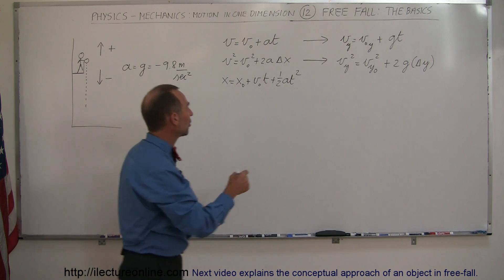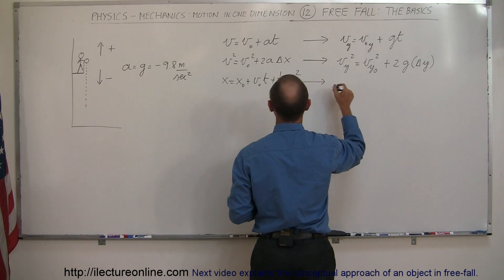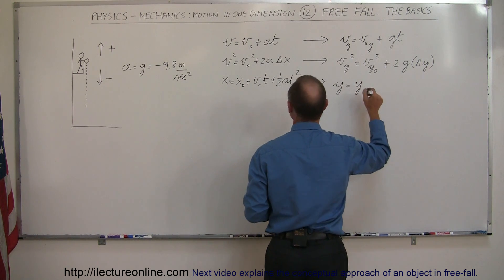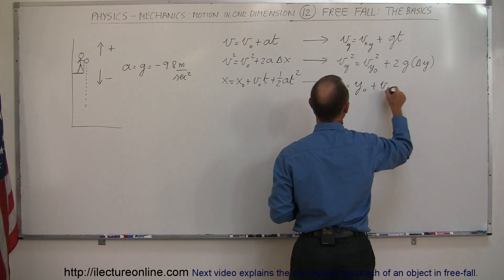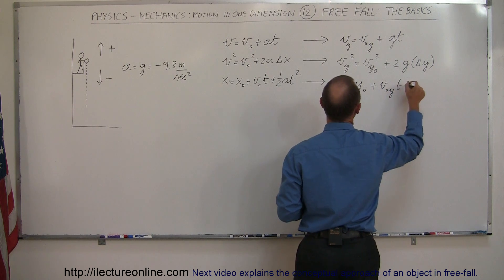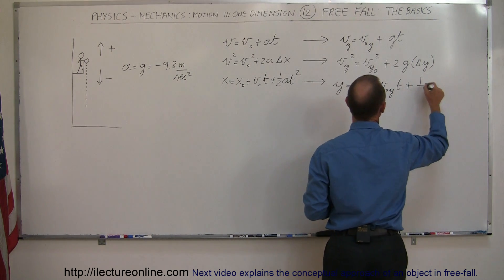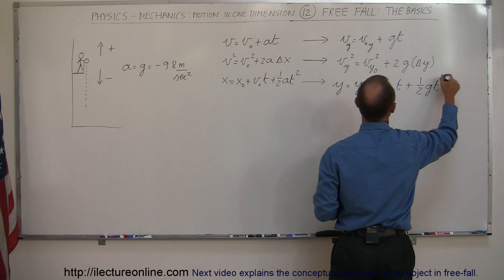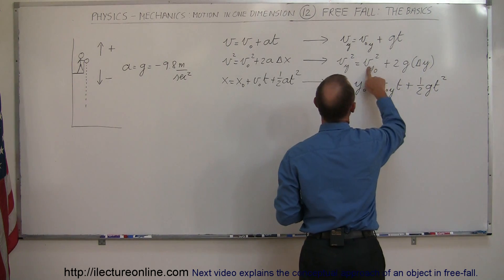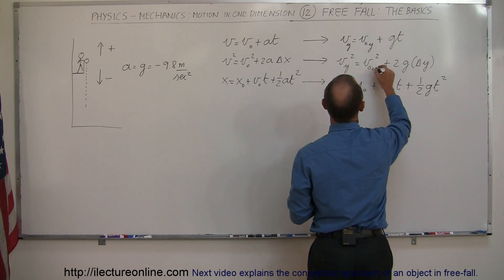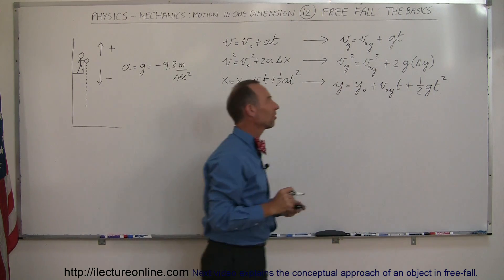And finally the third equation will become, instead of x we use y equals y initial plus V initial in the y direction times time plus one-half gt squared. And here maybe I want to rewrite this, I think I want to write initial in the y direction like that so I stay consistent.